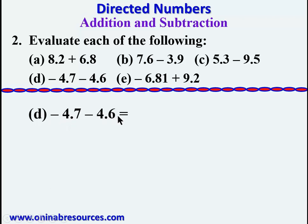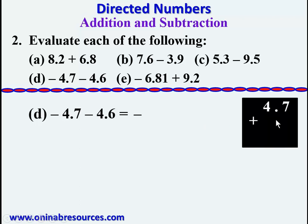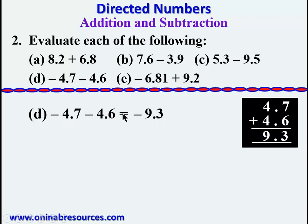For part d: negative 4.7 minus 4.6. This is a negative number minus a negative number, so we keep the common negative sign and add the two numbers. 4.7 plus 4.6: 7 plus 6 gives 13, write 3 carry 1; 1 plus 4 gives 5, plus 4 gives 9. That gives 9.3. Therefore negative 4.7 minus 4.6 gives negative 9.3.